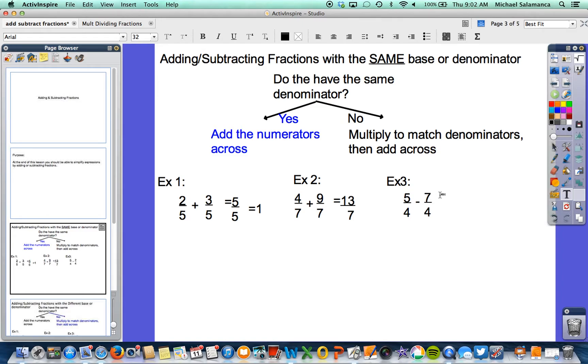Example 3, same idea. We're subtracting this time, so it's 5 minus 7 fourths, which is negative 2 fourths. So that's negative 2 fourths, or just negative 1 half.